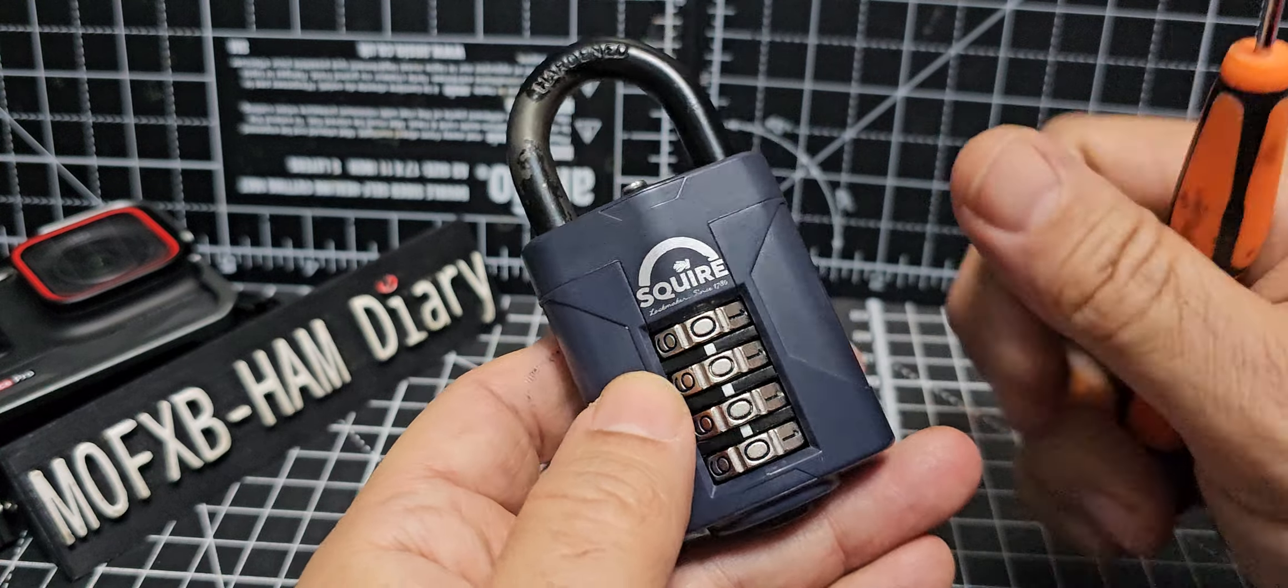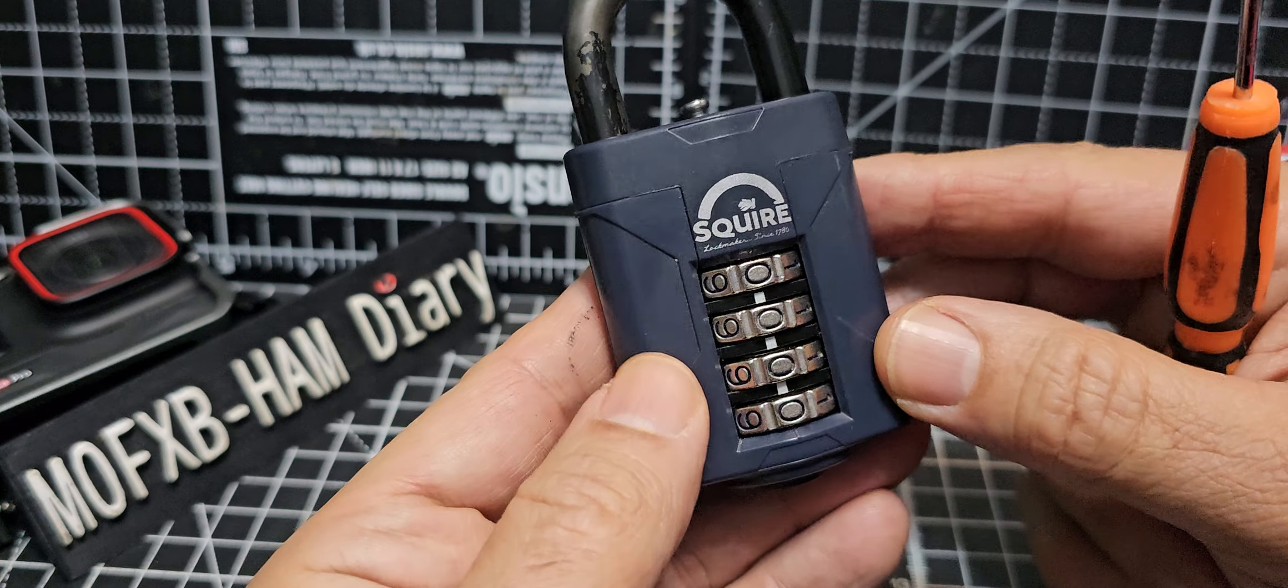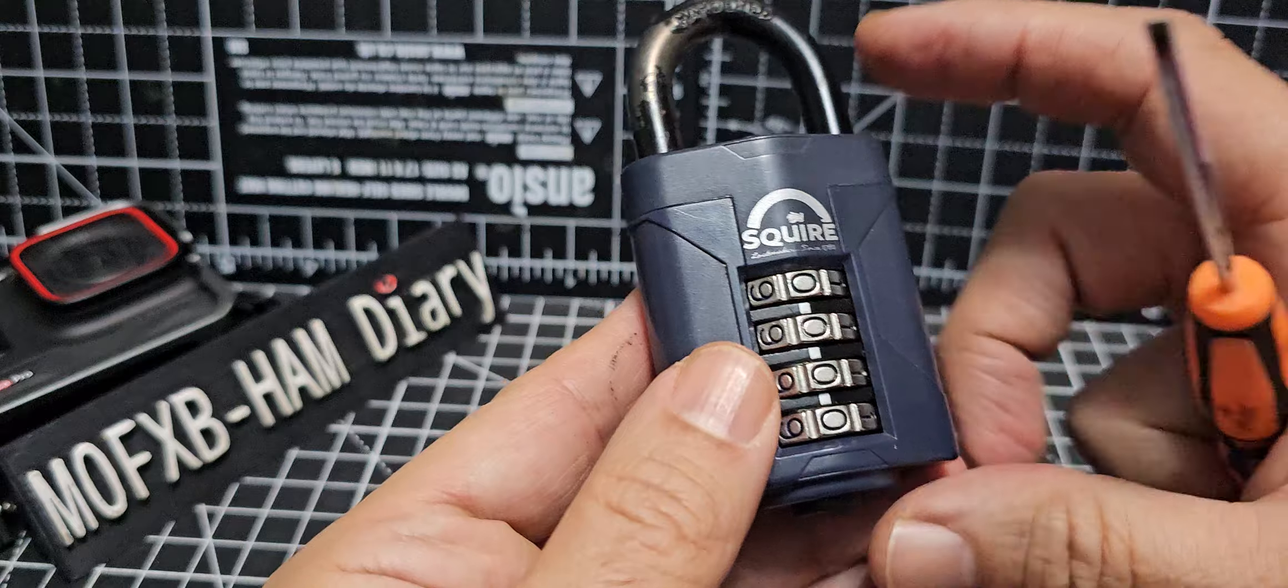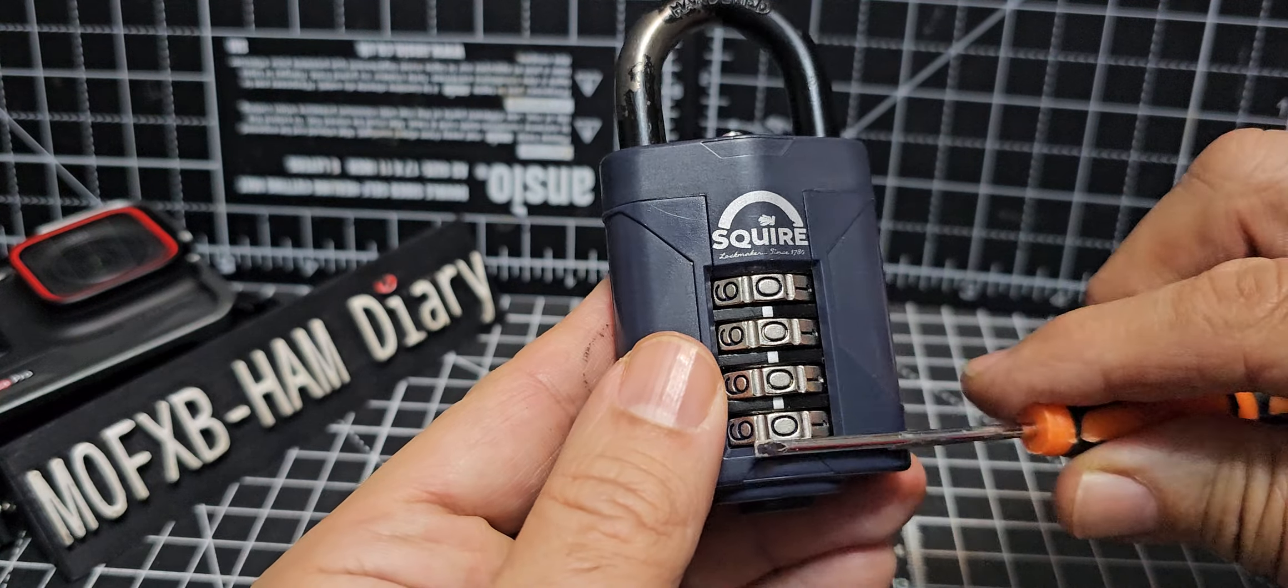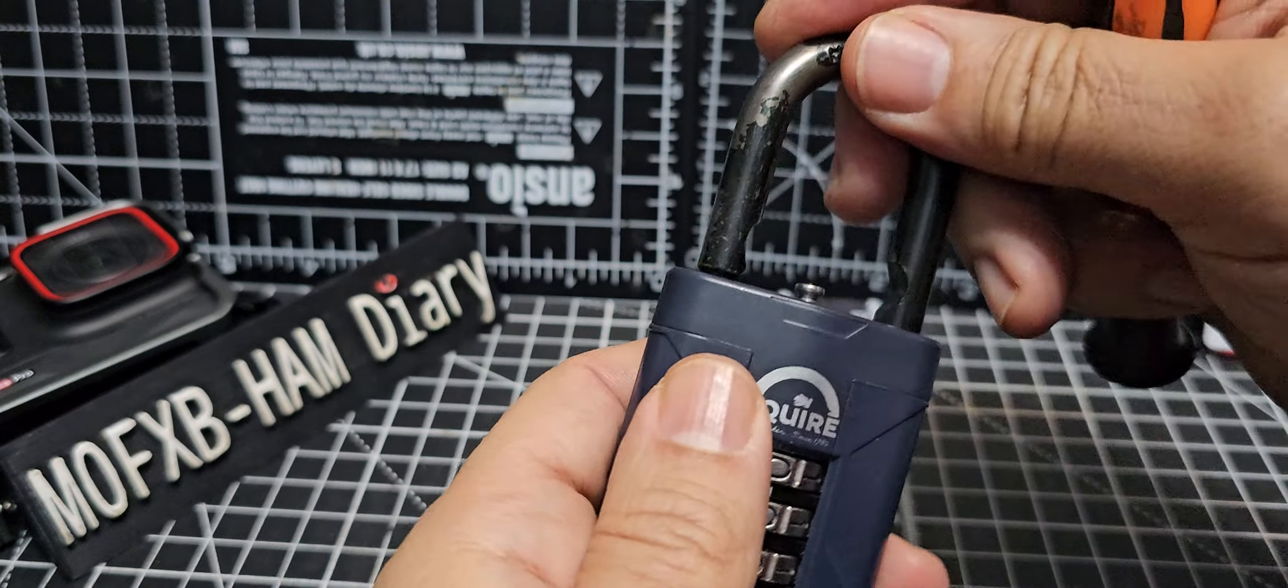Welcome back to the channel. If you have one of these Squire padlocks and you want to change the code, most of the time they'll come set with all zeros. If you press like that, it just opens.